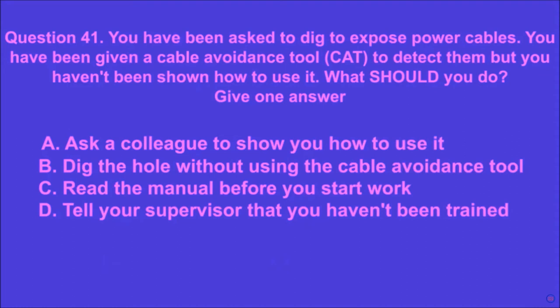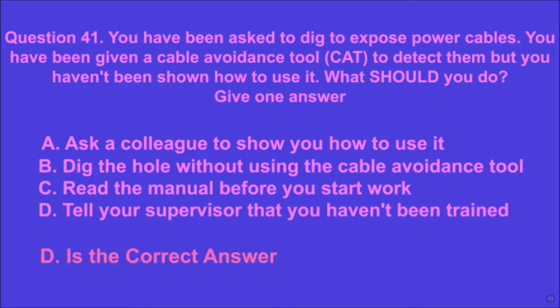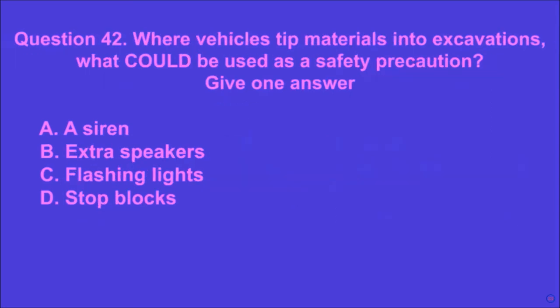Question 41: You have been asked to dig to expose power cables and given a cable avoidance tool (CAT) to detect them, but you haven't been shown how to use it. What should you do? Give one answer. A: ask a colleague to show you, B: dig without using the cable avoidance tool, C: read the manual before starting, D: tell your supervisor that you haven't been trained. D is the correct answer.